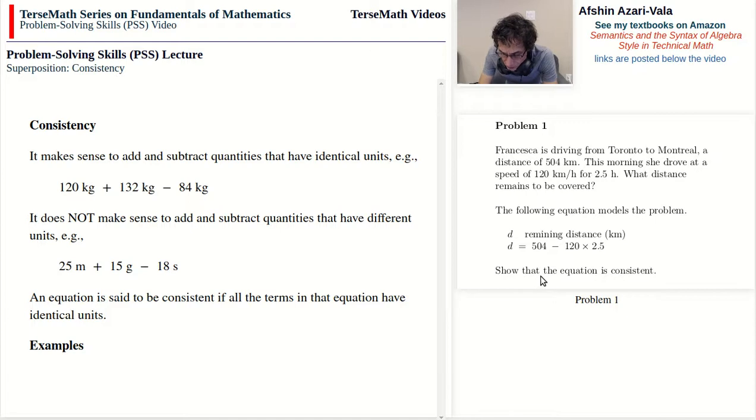And what we have to do is to show that the equation is consistent. So what we'll do is we're going to identify our terms and then find the units of these terms. If the units happen to be identical, then the equation is consistent. Otherwise, the equation does not really make sense. There are three terms here. On the right side, if you take a look at the equation, we've got the term D on the left side of the equation, 504 is a term on its own, and then there is the term 120 times 2.5. Let's list them and work out their units.